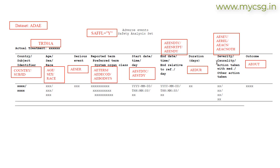There are several columns to be presented in this listing. For the country and subject identifier column, we are asked to use the variables COUNTRY and SUBJECTID. For age, sex, and race, we are asked to use the variables AGE, SEX, and RACE. And for the serious event column, we are asked to use the value from AESCR.